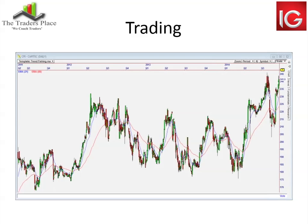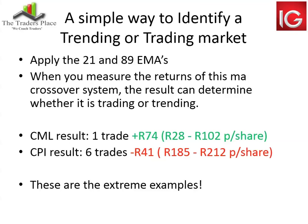Trading markets and trending markets require different systems to trade. Today we're just looking at the difference between the two. One of the simple ways to identify a trending or trading market — those of you that know me know the 21 and 89 exponential moving averages are what I apply to all my charts. From gold to natural gas to currencies, everything on a daily chart and a weekly chart is done with the 21 and 89 exponential moving averages. When you measure the returns of the moving average crossover system — 21 crosses above the 89, we buy; when the 21 crosses below the 89, we sell — that result gives you an idea as to whether it's trending or trading.